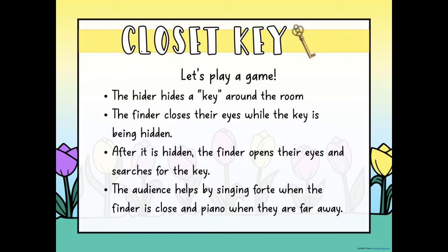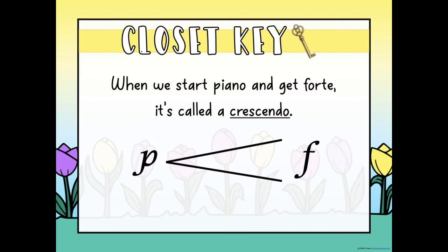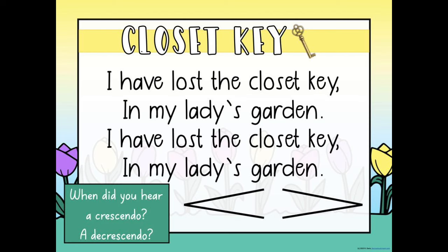Then we play the game. The game Closet Key is really fun — one person is the hider, one person is the finder. The finder closes their eyes so they can't see anything, and the hider hides a key around the room. I've been using an orange ruler because I didn't have a key I didn't want them to lose. I always tell them to leave an inch sticking out so you can actually see it. They hide it, come back and sit down, and then the finder comes out and has to find the key. The group helps by singing forte when they're close and piano when they're far away — so you can also use this to work on dynamics.